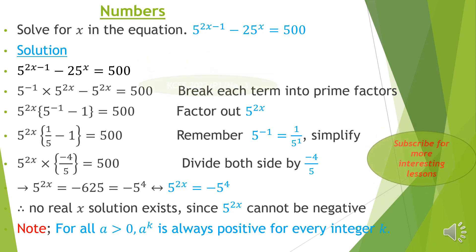And therefore, we leave our answer at 5 raised to 2x equals negative 5 raised to 4. So, I believe you have followed the procedure on how to solve some numbers equation of such format. Subscribe for more interesting lessons to follow. Thank you.